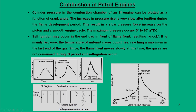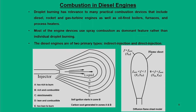In normal combustion, the pressure-time diagram trace is smooth. With knocking, oscillations appear towards the expansion stroke at the end of combustion. Zone 4 is the most likely location for self-ignition due to knocking.